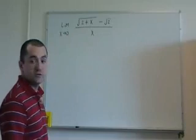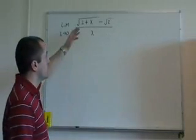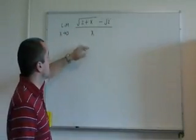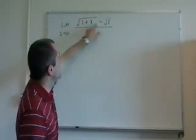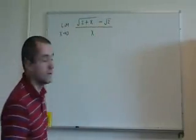So what I'm going to do is multiply everything on the top and everything on the bottom by the conjugate of this piece here on top. So let's do that.